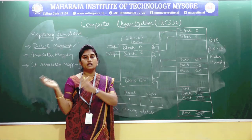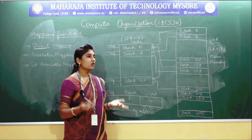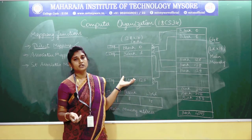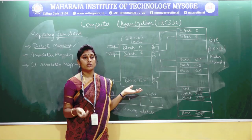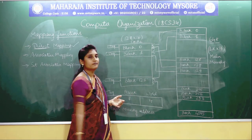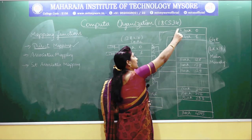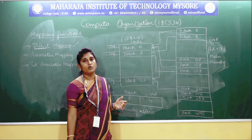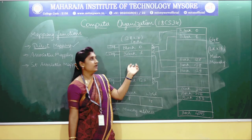You might ask: how can all the main memory blocks fit into the cache memory? No, they cannot. As already stated, you will not be storing all the contents of the main memory at the initial stage itself. You will only store the contents which have been repeatedly used — only those contents will be stored in the cache memory.